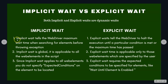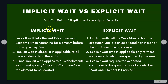What is the difference between them? Implicit wait tells the WebDriver the maximum wait time when it is searching for web elements. Explicit wait tells the driver to halt execution until a particular condition is met or the maximum time has passed. The key difference is that implicit wait is global — once you set it, it is applicable to all the web elements in your script.